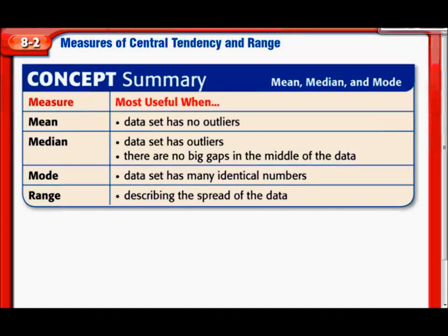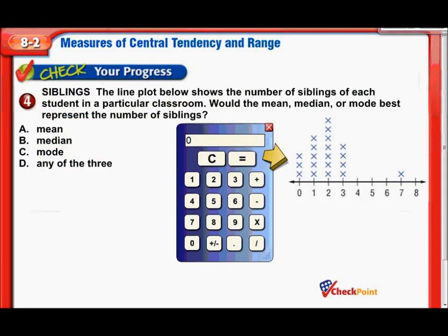Now this slide. You're asked in some questions, which one, the mean, median, or mode describes the data best. The mean is the best one when there's no outliers. The median is the best if there is outliers but there's no gaps in the middle of the data. The mode is the best one if you have a lot of identical numbers. So here we are, the line plot shows the number of siblings of each student in a particular classroom. Let's actually figure those out so that we can determine which one's the best one.